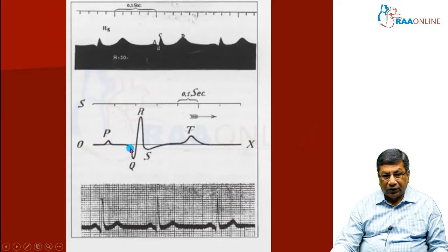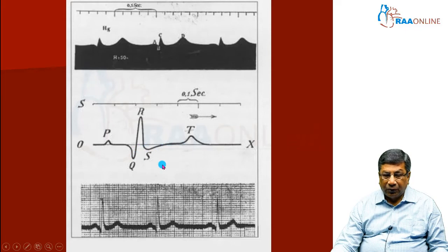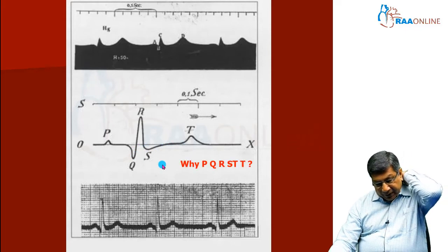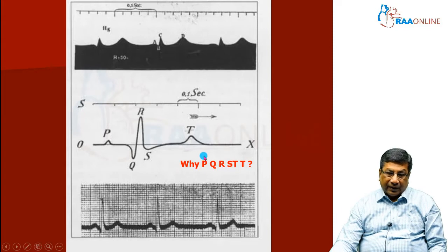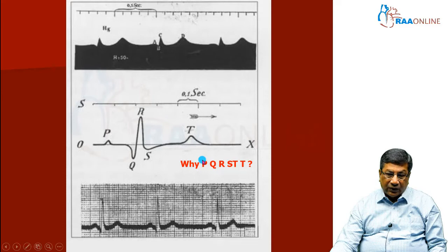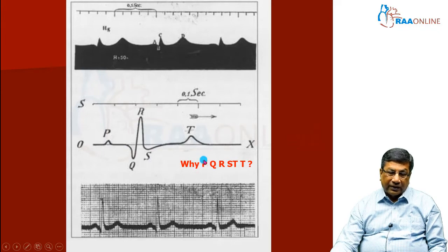This is the PQRST waveform that Willem Einthoven produced in 1902, and it has almost the same relationship as today's electrocardiogram of PQRST. People wondered why Einthoven started with P. It is customary to start with A, B, C, D, but Einthoven wanted to be different and start with the middle of the alphabet, which is O. However, he did not want to start with O itself, so he selected the next letter, giving us PQRST. That is why the first waveform of the electrocardiogram starts with P.